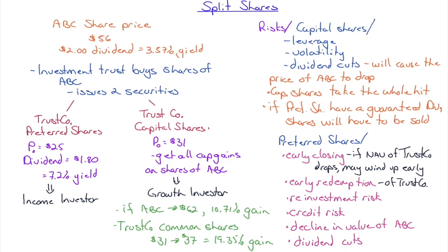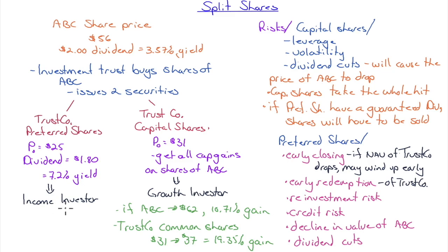Split shares are a neat structure. You can conceive of almost any income-producing asset as a combination of an income stream and the value of the underlying asset. Example: ABC stock at $56 pays a $2 dividend — a 3.57% yield. An investment trust would buy ABC shares and issue two securities from that trust: preferred shares (TrustCo preferred) and capital shares (TrustCo common). The trust sells preferred shares at $25 each, paying a dividend of $1.80 from the $2 ABC dividend — giving preferred shareholders a 7.2% yield.